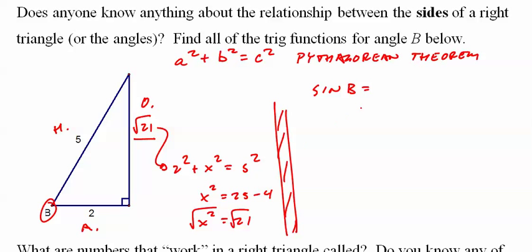Sine of B is root 21 over 5. Cosine of B, 2 over 5. Tangent of B, root 21 over 2. Do all the reciprocals.